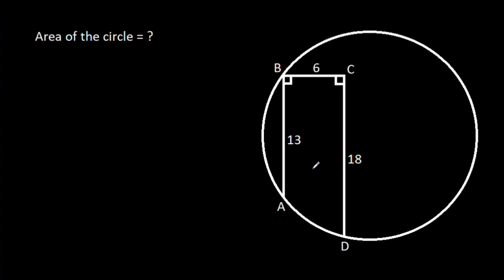In this video, we have been given that AB is 13, BC is 6, CD is 18, and angle ABC is 90 degrees.